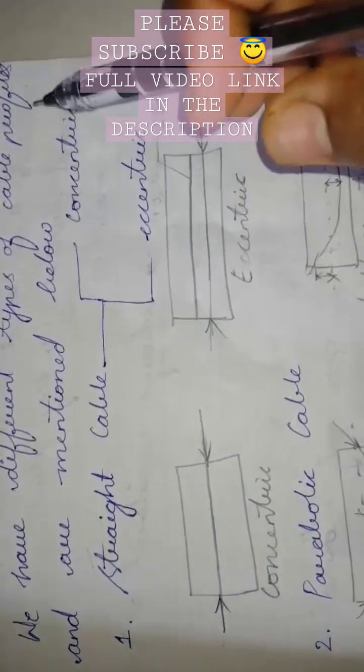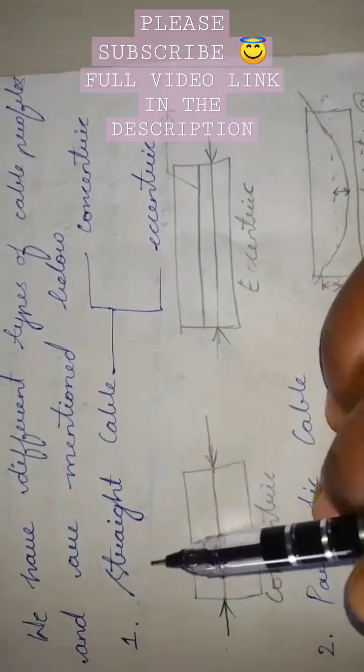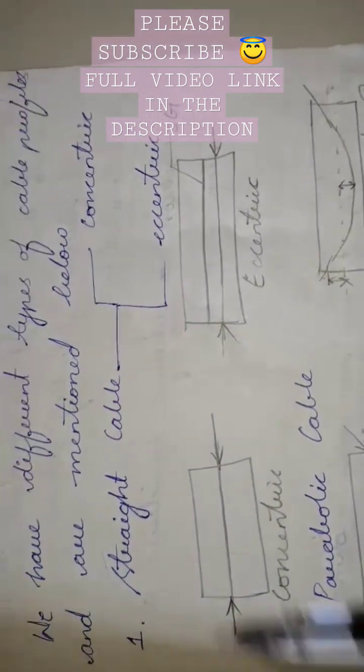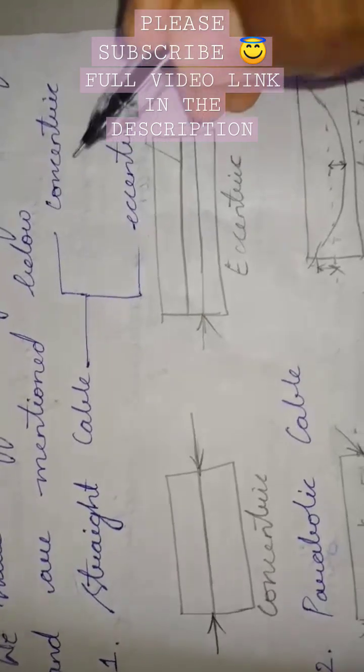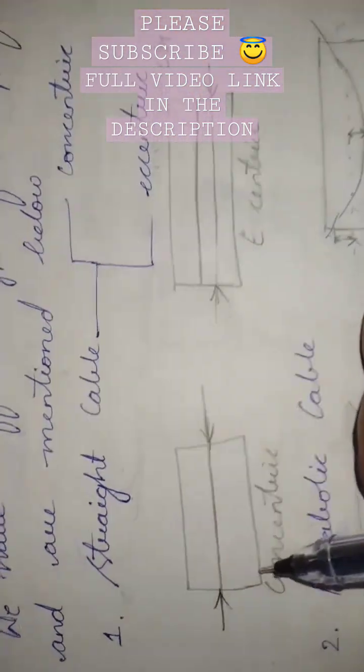We have different types of cable profiles mentioned below. First, we have straight cable, which is further classified as concentric and eccentric. Concentric means it passes through the centroidal axis of the member.